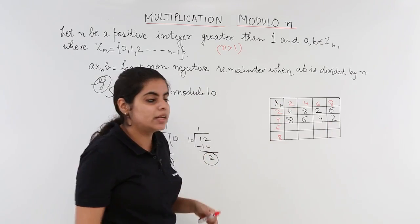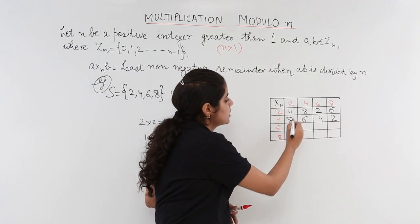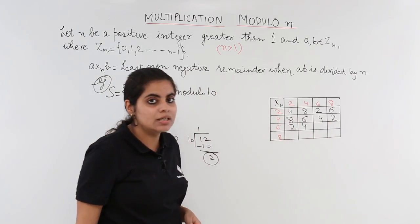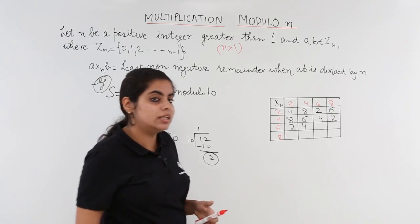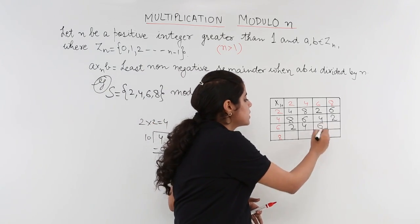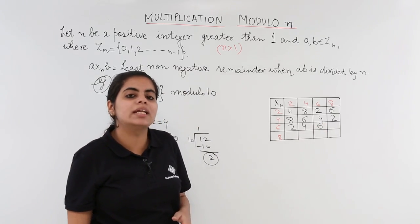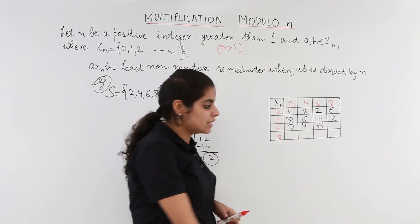6 x 2 is 12. 12 divided by 10 is 2 remainder. 6 x 4 is 24, 4 remainder. 6 x 6 are 36. 10 x 3 is 30. 6 is the remainder. 6 x 8 is 48. 48 divided by 10 will give me 8 as the remainder.